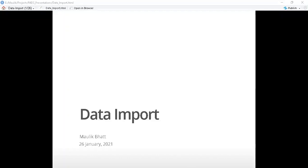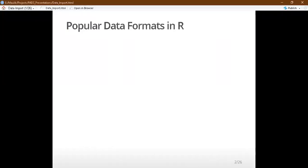Today we are discussing the data import chapter 11 from the R4DS book. I want to start with the popular data formats rather than going by the structure of the book. I have tweaked the schedule. Generally, the easiest data to import is the R data format, which is native to R — the .RData or .RDS format.